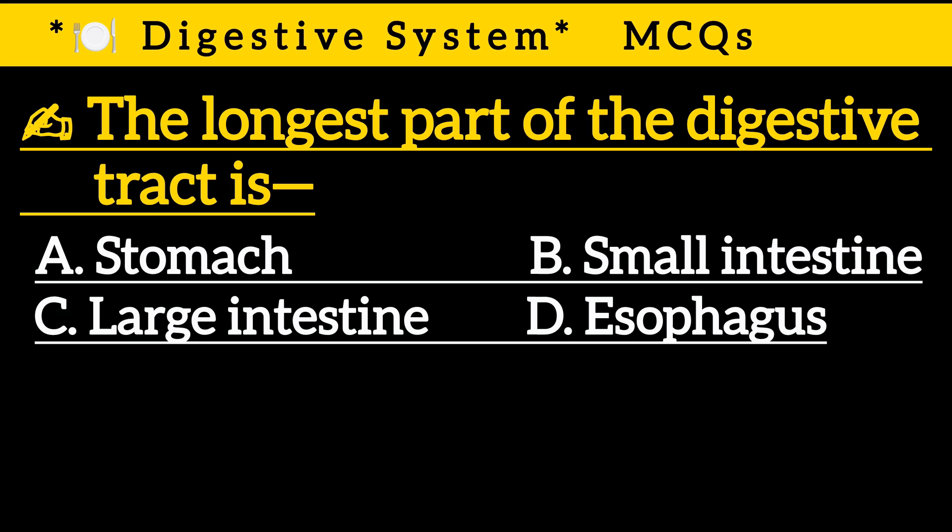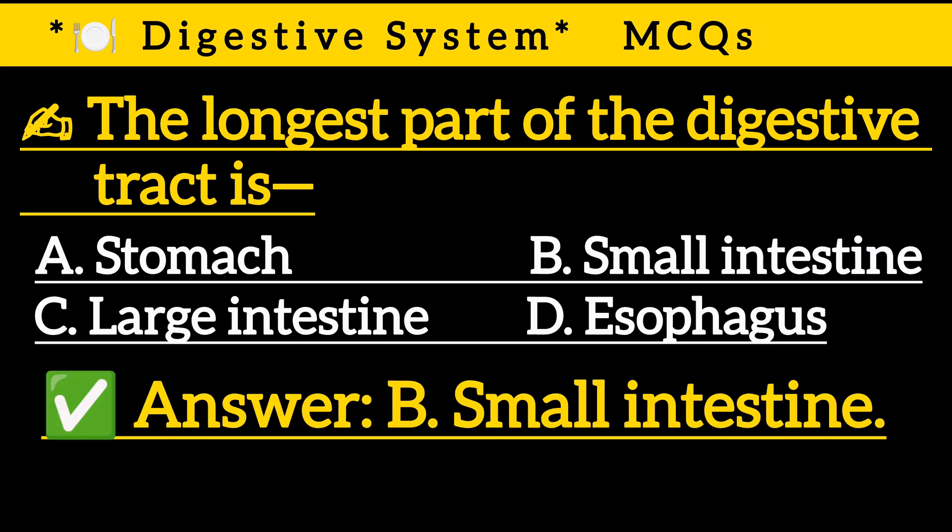Question 1: The longest part of the digestive tract is — Option A: Stomach, Option B: Small intestine, Option C: Large intestine, Option D: Esophagus. Correct answer is Option B: Small intestine.